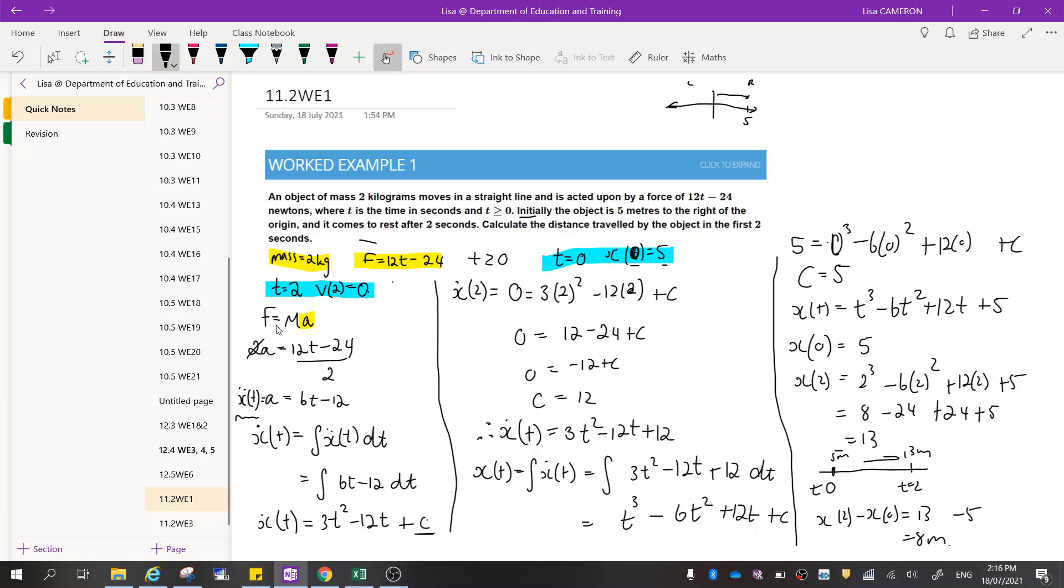So now I'm going to be taking this information here in blue. So when time is equal to 2, the speed is 0 because it's at rest. So that means that over here, when time is equal to 2, or when I substitute 2 into my function, it should be equal to 0 because it's at rest. So we've done that, and we've rearranged to get c is equal to 12. Now I can put that back into my formula, and I've got a full formula.